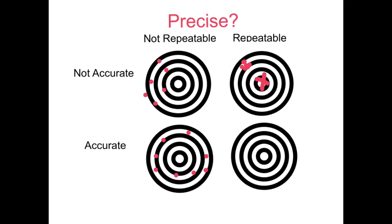In this final example, I take six measurements and they all land right here on the bullseye. The measurements are accurate — they're landing on the bullseye — and they're repeatable. If I were to make a seventh measurement, more than likely it's going to land right there in the bullseye. This combination of accuracy and repeatability is what we mean by something being precise. And significant figures tell us how precise a measurement is. The more significant figures we have, the more precise a measurement is.